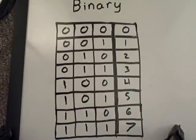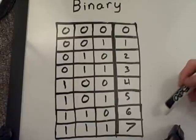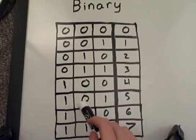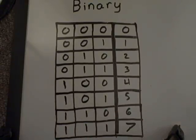This is a chart I made to show all the various combinations you can do using three bits. You can count from zero to seven. Just like on the previous example, one, zero, one — that's five.